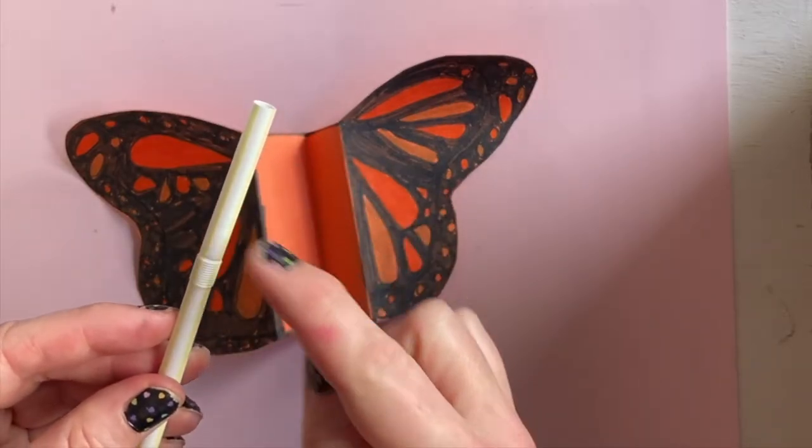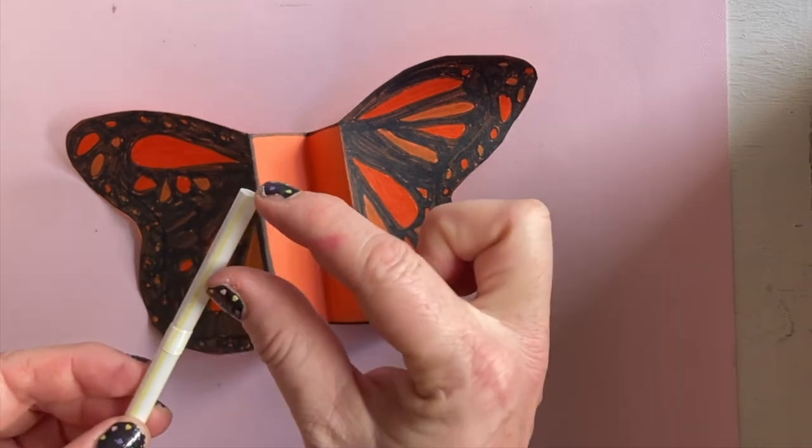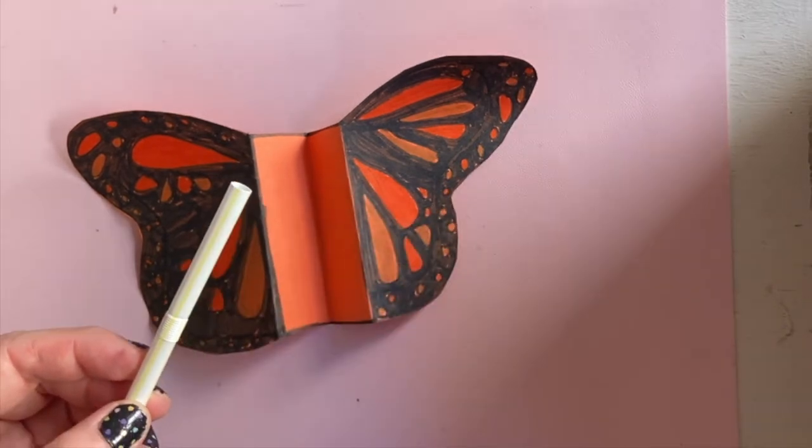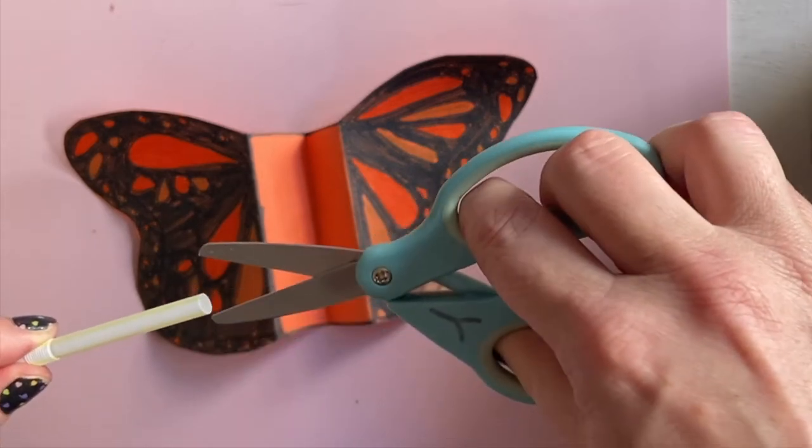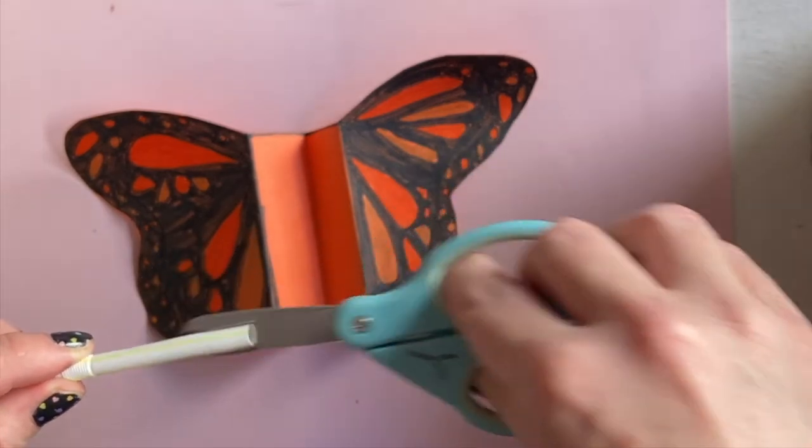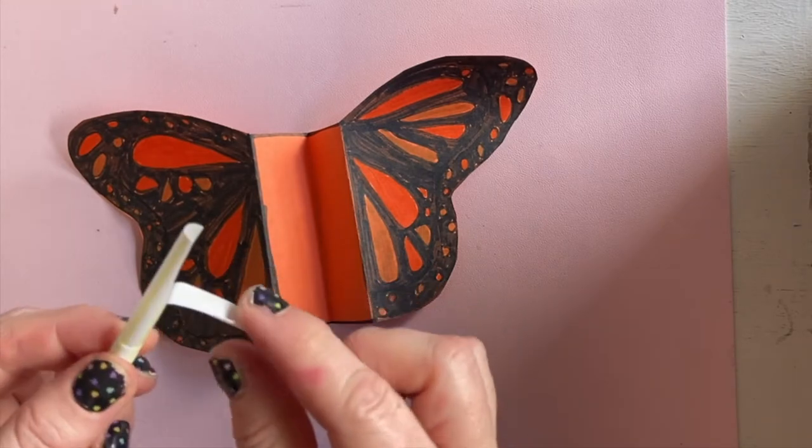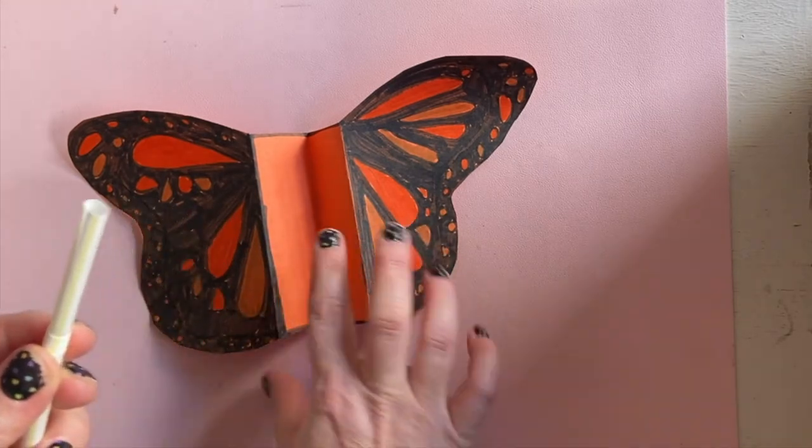It's time to add the straws. Start with your small straw and we're going to make two small cuts into the top. Here's one small one and two small cuts. That will split the straw just like this.